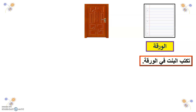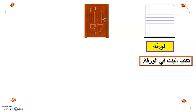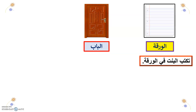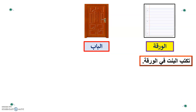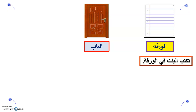We also have a door in the classroom and school. I hear somebody say 'bab' — very good! The Arabic word is 'Albab.' Albab means 'the door.'